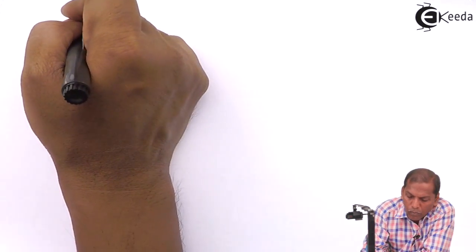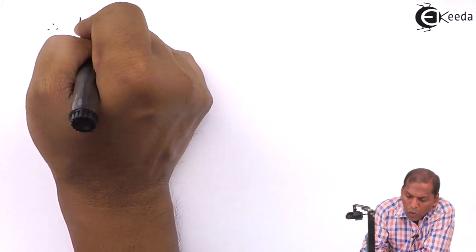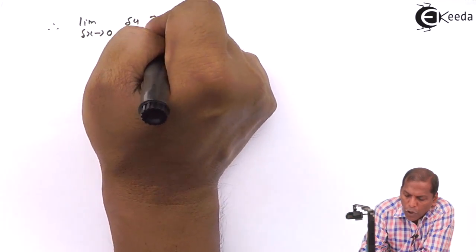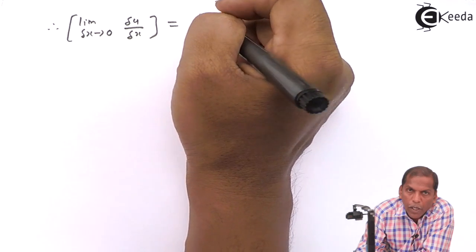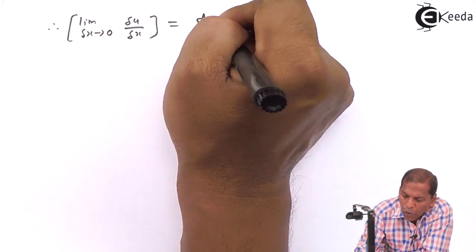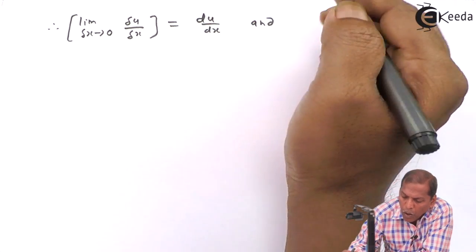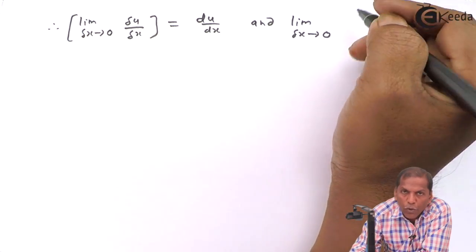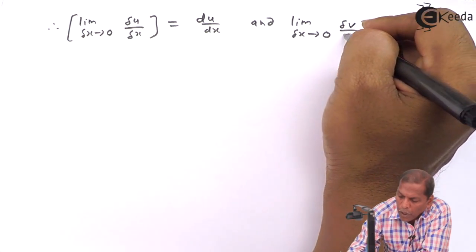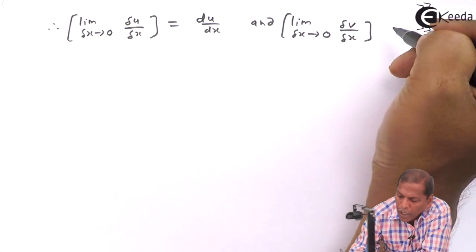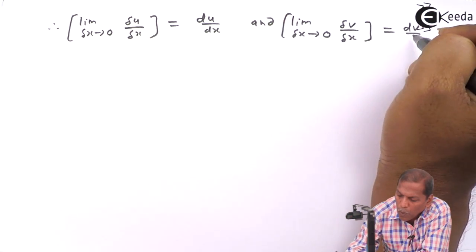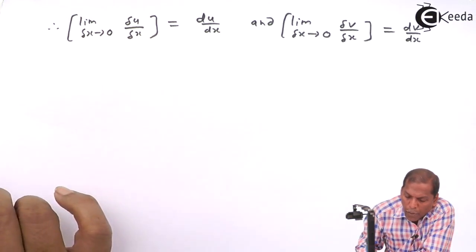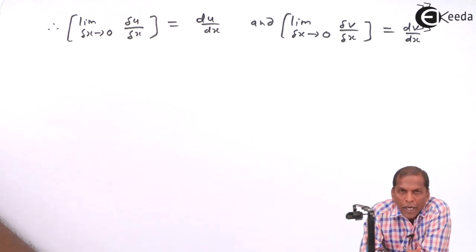Therefore, lim(Δx→0) Δu/Δx = du/dx, and lim(Δx→0) Δv/Δx = dv/dx.